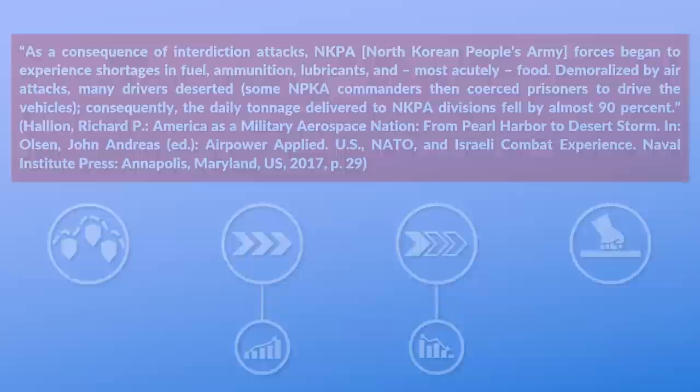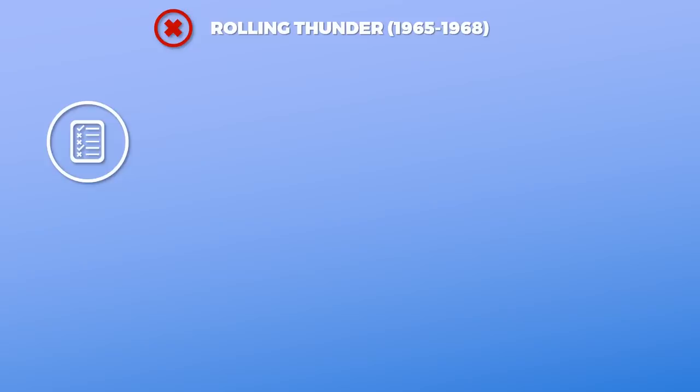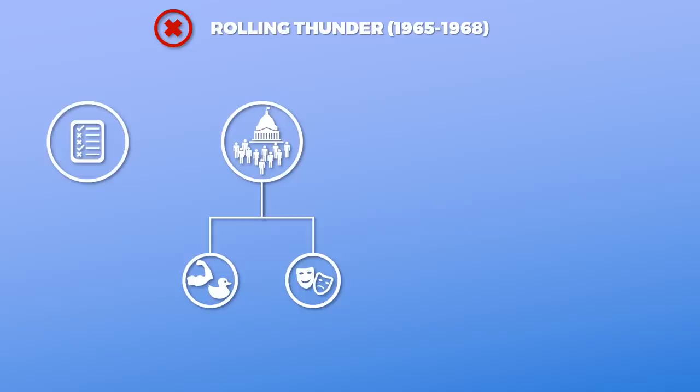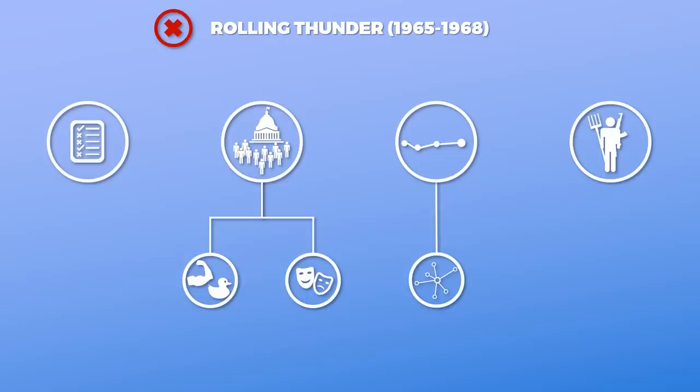A typical example of a failed interdiction campaign is Rolling Thunder. This was due to several factors: poor intelligence — the US had very limited information on the effect bombing had on North Vietnamese supplies. Political restrictions and micromanagement were also detrimental in terms of effectiveness and morale. Additionally, the Ho Chi Minh Trail was not a single trail but a system of thousands of small paths in difficult terrain — and at the same time, low maintenance, since the Viet Cong lived mostly off the land, requiring very few supplies.